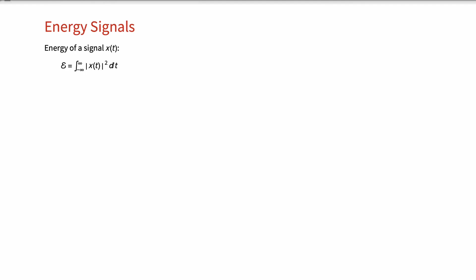The energy of a continuous time signal x(t) is defined as expressed here. Similarly, we have the definition for discrete time sequences. Based on this definition, we can say that all bounded and finite duration signals or sequences have finite energy — they are energy signals. If a signal is of infinite length, then it may or may not have finite energy. It is also clear that if a signal is periodic, then it will have infinite energy.